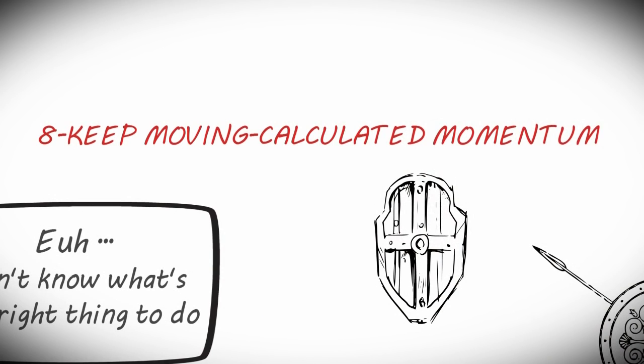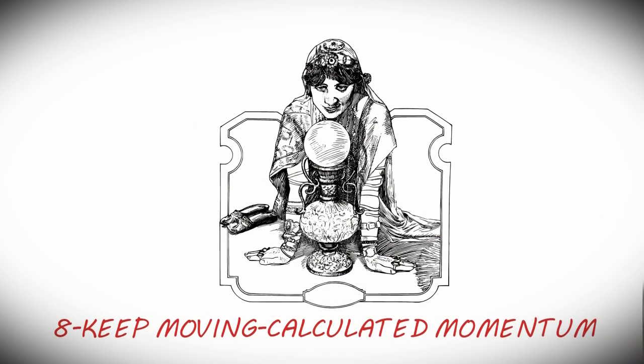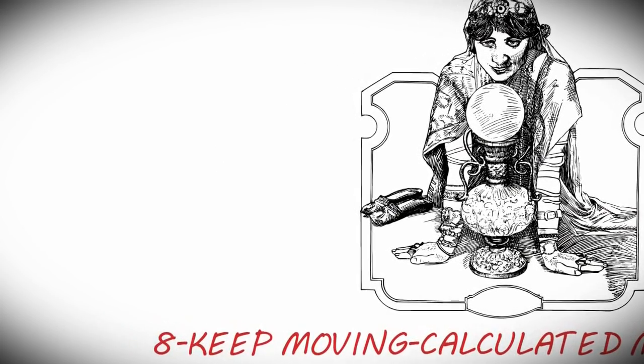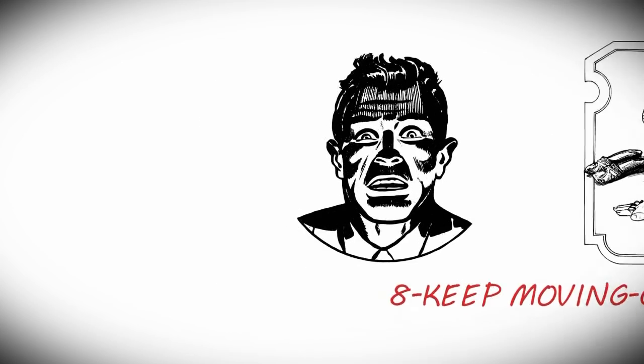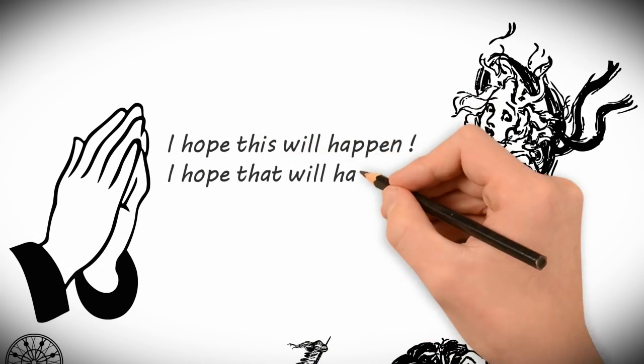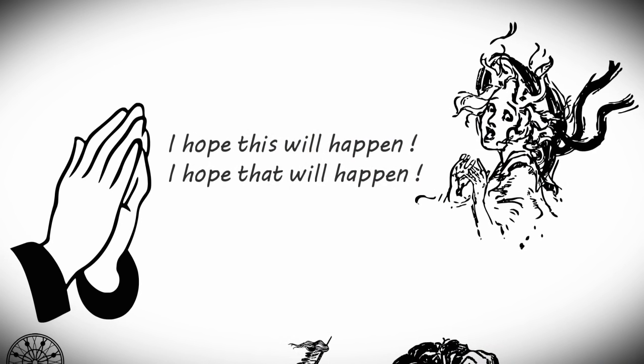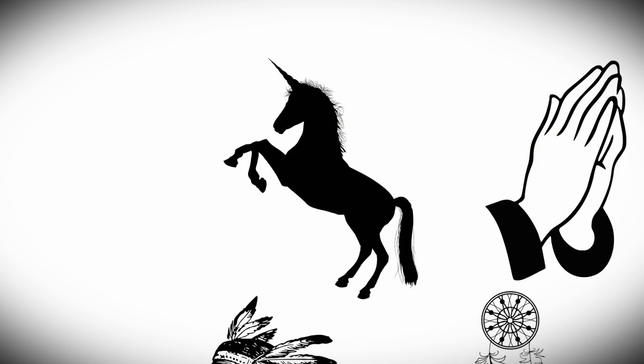Keep moving. Calculated momentum. We waste ample time thinking about the future. We dread chaos and long for certainty. Always making sure everything goes as planned. Yet fall short when confronted with the unexpected. I hope this will happen. I hope that will happen. A self-destructing habit. Anticipating imaginary events to occur.